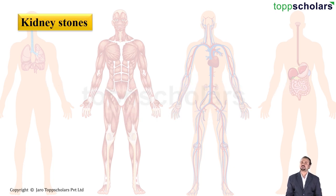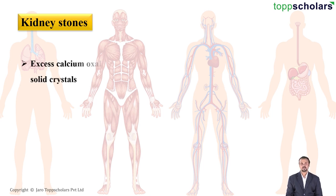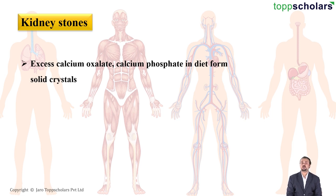Let us begin with our very first disorder — kidney stones. The name itself is quite self-explanatory: these are stones which develop in the kidney or anywhere in the urinary tract. They mainly develop due to excess dietary minerals, and the stones are usually made up of calcium oxalate or calcium phosphate.